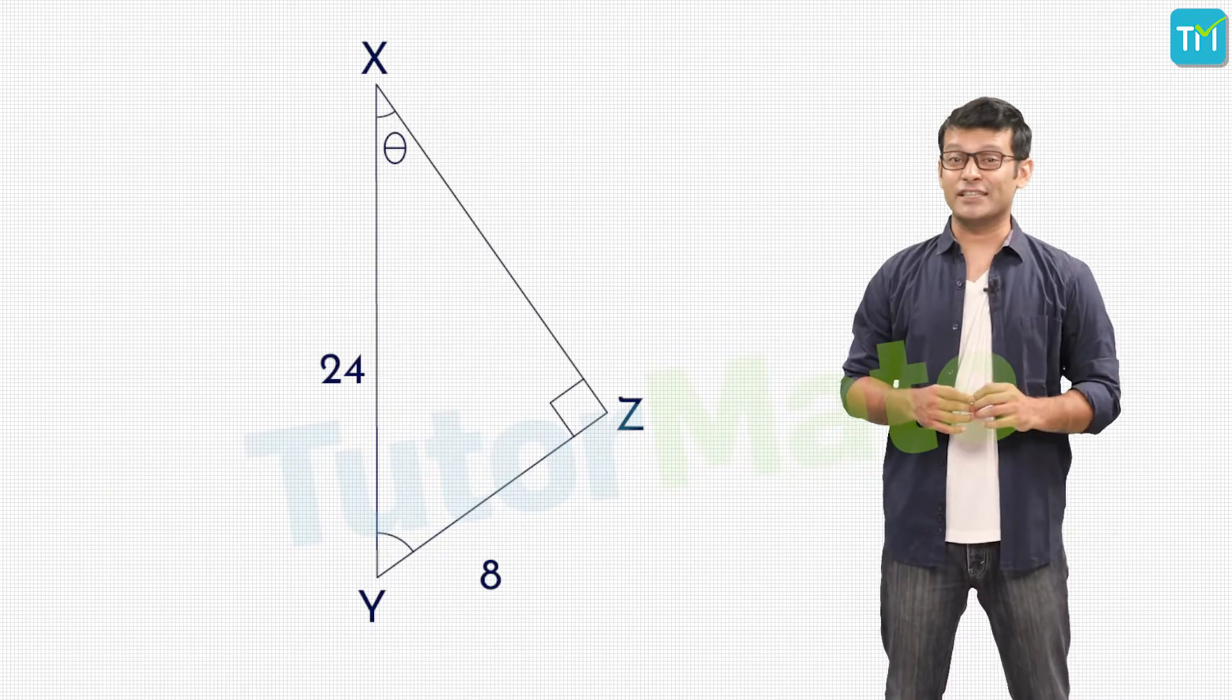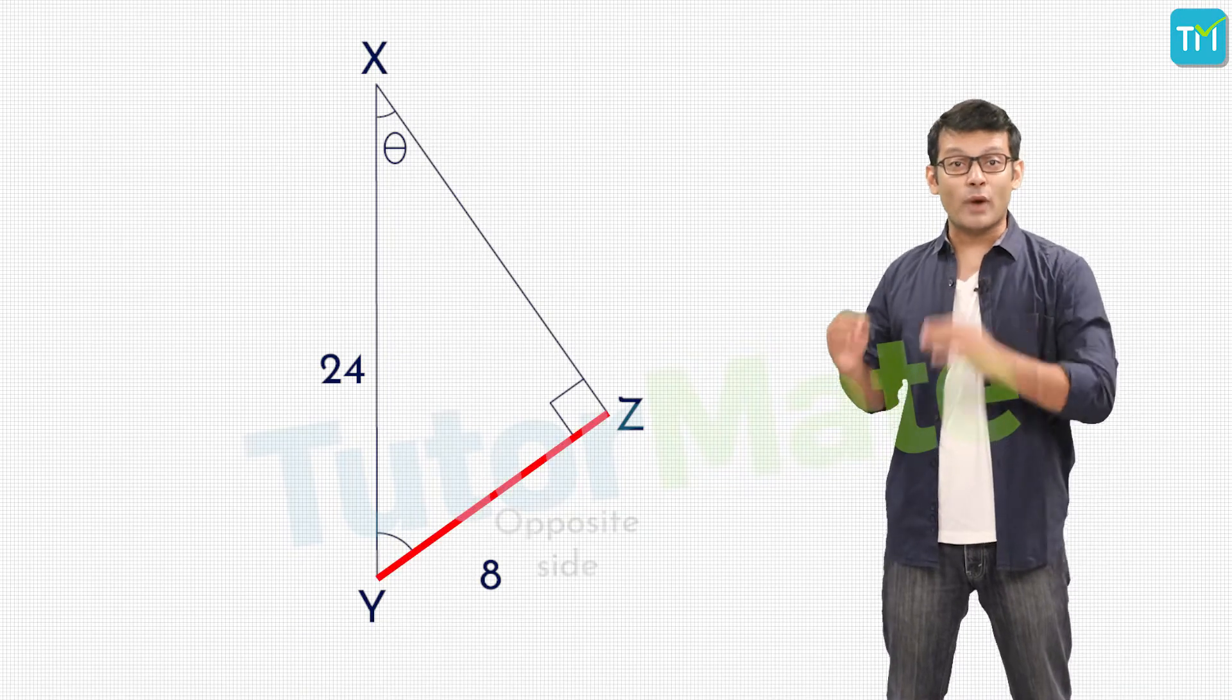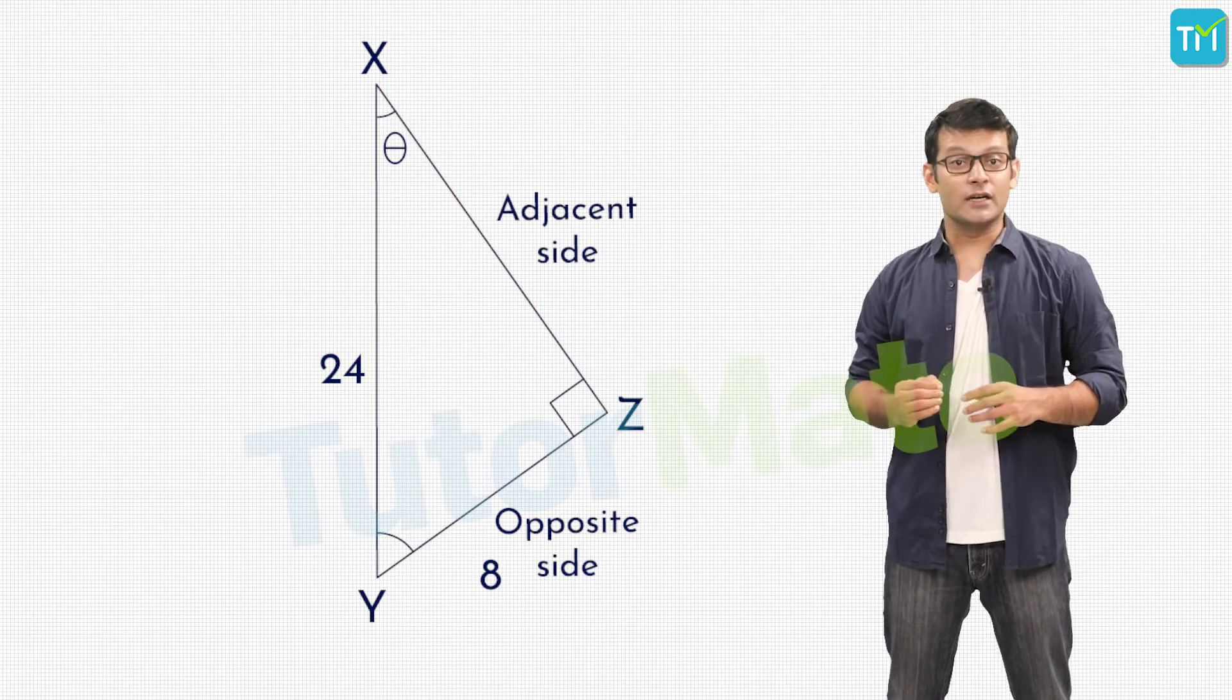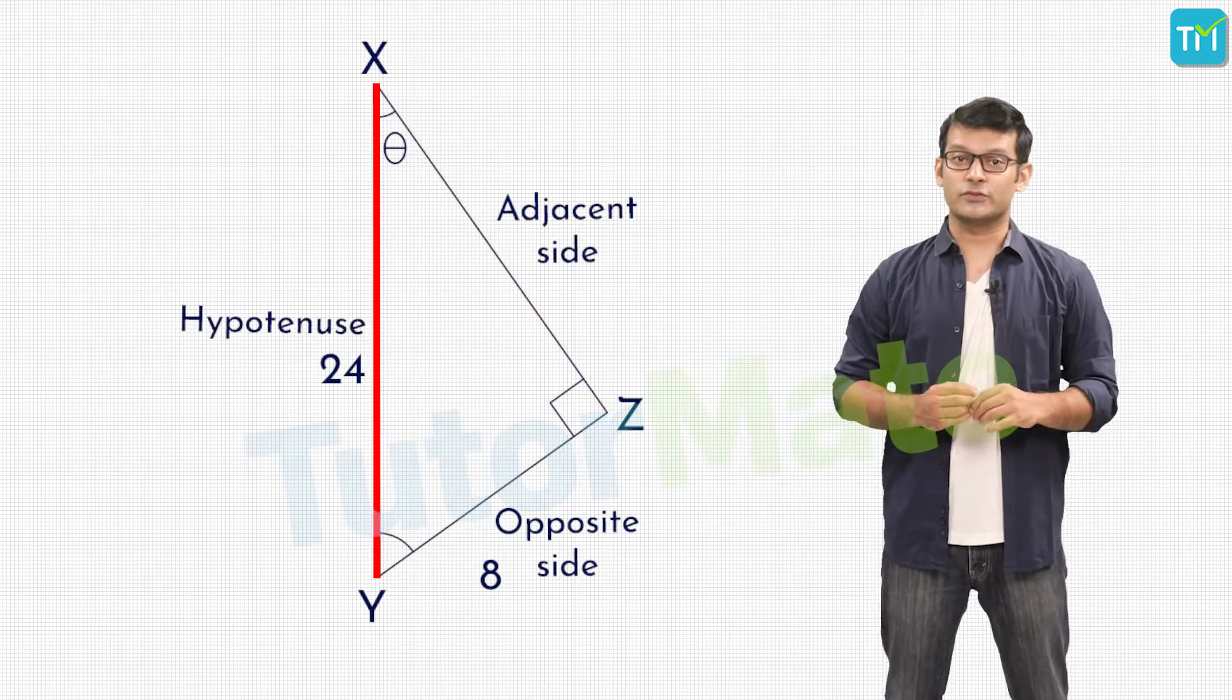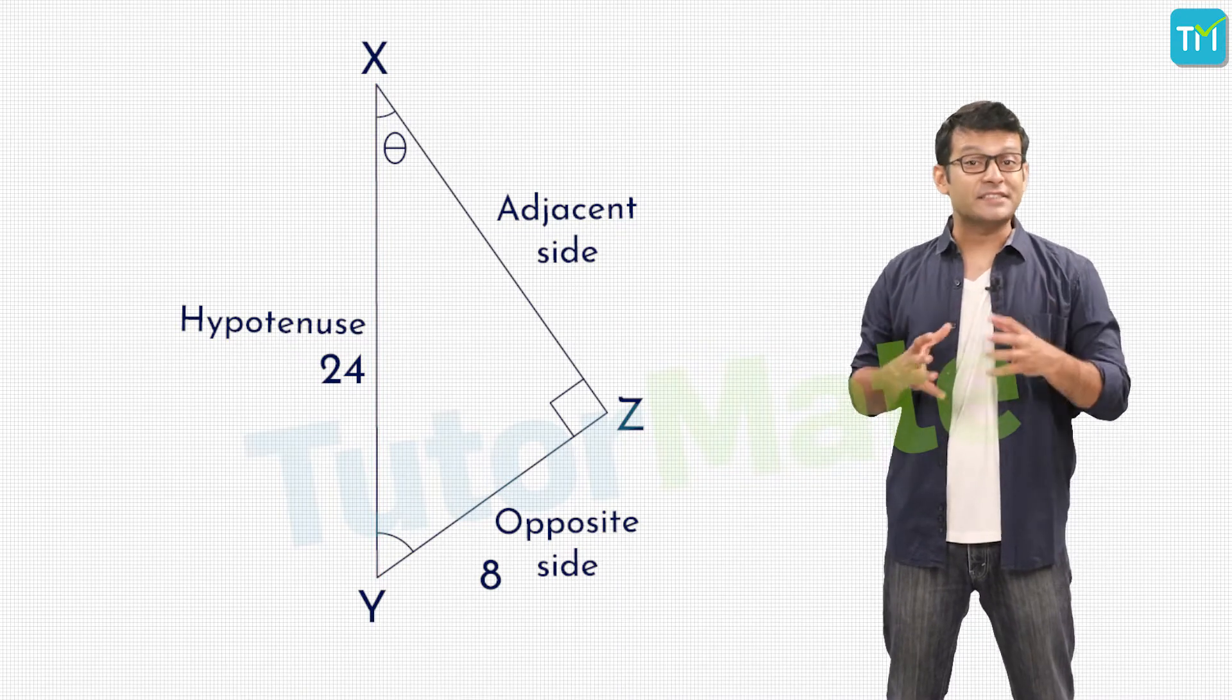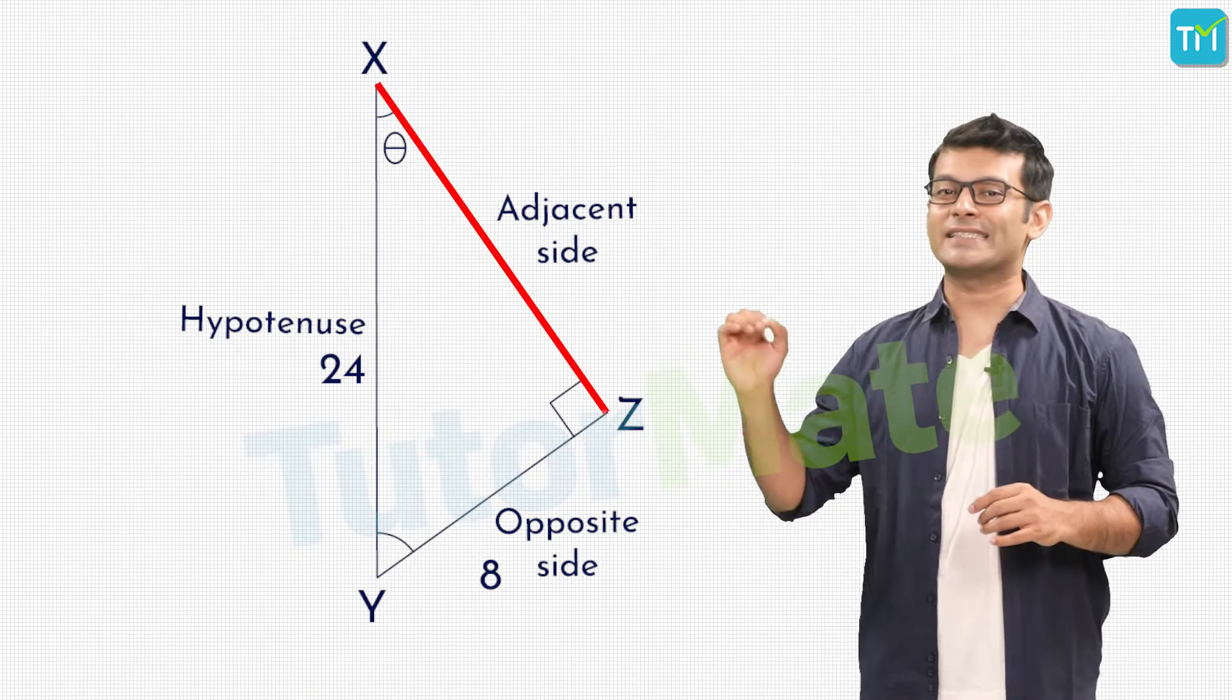Now, to find these ratios, we need to know all three sides of the triangle, where side YZ is the side opposite to θ, side XZ is the side adjacent to θ, while XY is the hypotenuse. We know the lengths of XY and YZ, but XZ is unknown to us. So first, we will find out the length of the side XZ.